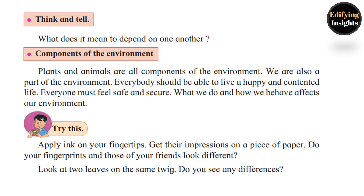Think and tell: What does it mean to depend on one another? Here is an example: parents go to work, they earn money, and with that money they go to the shop and get their daily needs for day-to-day life. Money is paid and they receive things. And with that same money, the shopkeeper fulfills all his daily needs. So here everyone depends on one another for their needs.